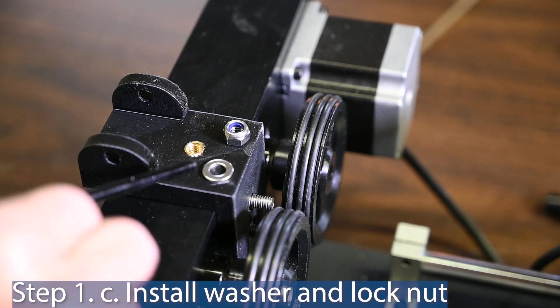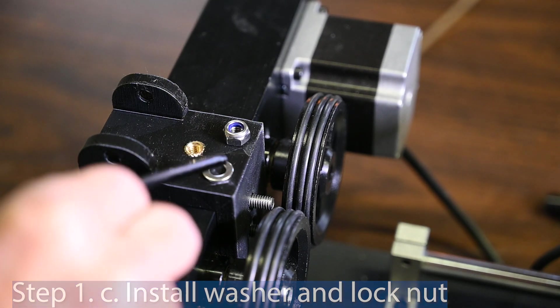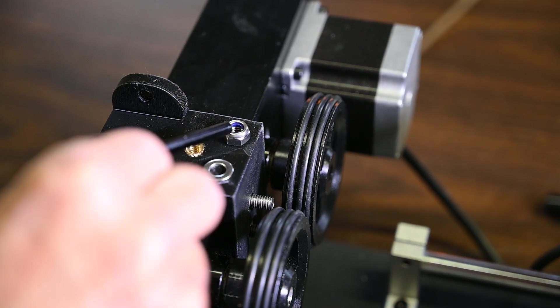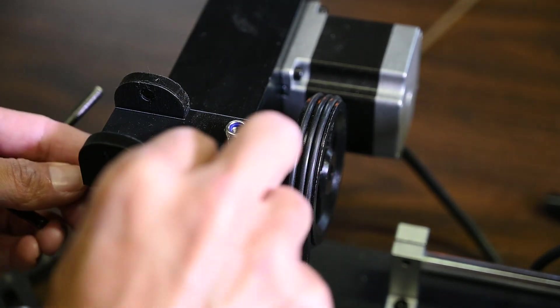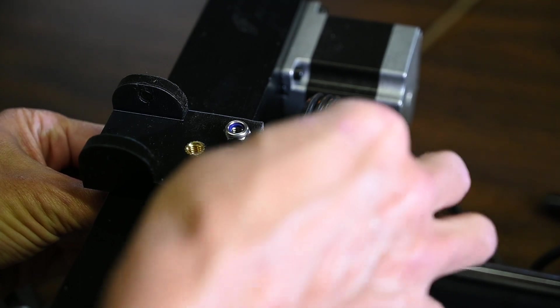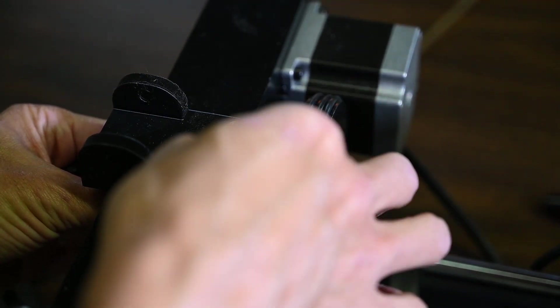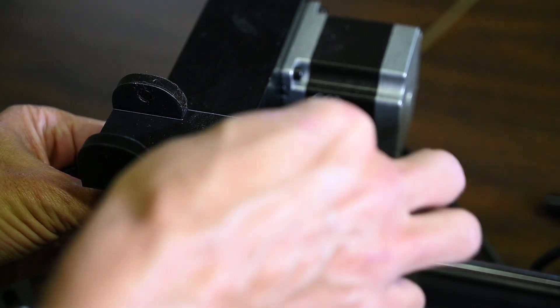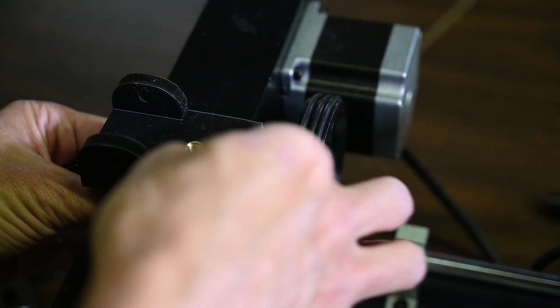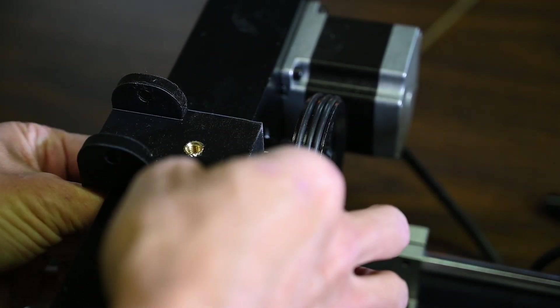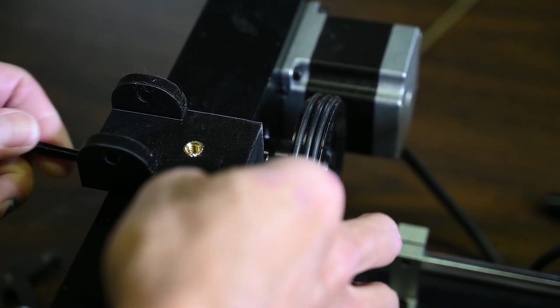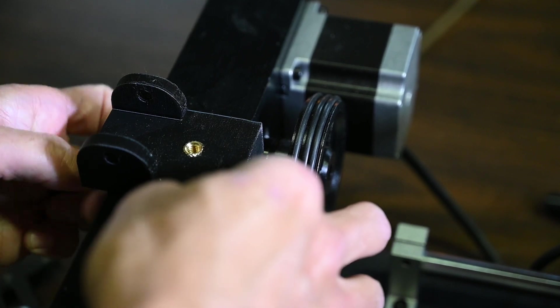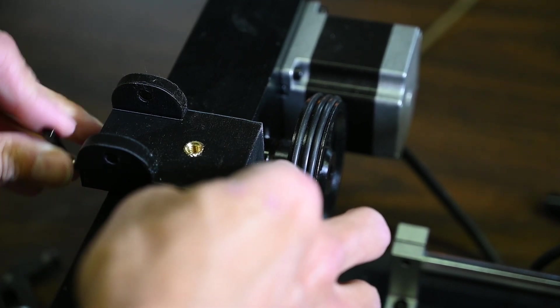In the second part of step one we're simply going to place the washer and the nylon lock nut onto this bolt. It may make it a little bit easier if you push the bolt in a bit so that you can slip on the washer. And the same holds true for the nut that you'll be putting on here.